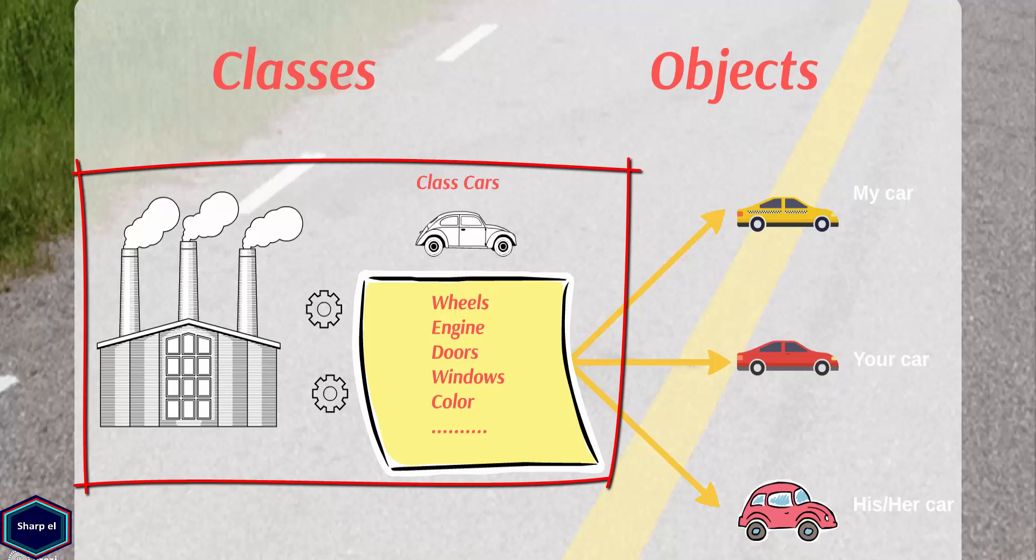Suppose I own a factory which produces new cars. As we all know, all cars have four wheels, at least one engine, doors, seats, color, etc.